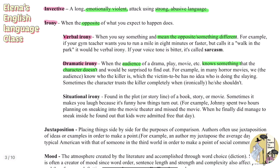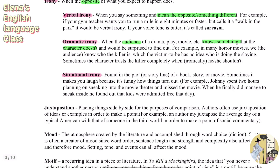The last type of irony is situational irony, found in the plot or storyline of a story or movie, and it sometimes makes you laugh because of how things turn out. For example, Johnny spent two hours planning to sneak into a movie theater but when he finally got inside, he found that kids were admitted free that day. He didn't need to put in all that effort — that ironic, funny outcome is situational irony.